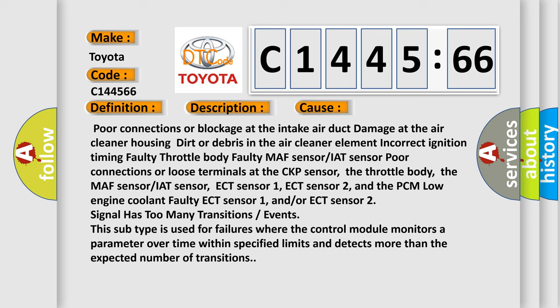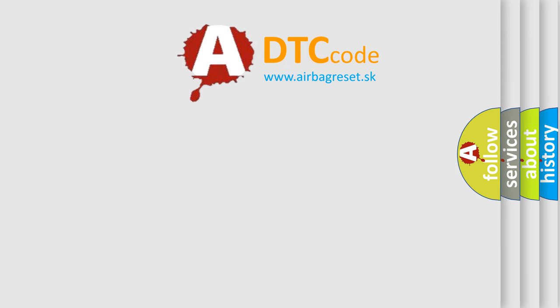This diagnostic error occurs most often in these cases: poor connections or blockage at the intake air duct, damage at the air cleaner housing, dirt or debris in the air cleaner element, incorrect ignition timing, faulty throttle body, faulty MAF sensor or IAT sensor, poor connections at the ECT sensor 1, ECT sensor 2, and the PCM low engine coolant. Faulty ECT sensor 1 and/or ECT sensor 2 signal has too many transitions or events. This subtype is used for failures where the control module monitors a parameter over time within specified limits and detects more than the expected number of transitions.